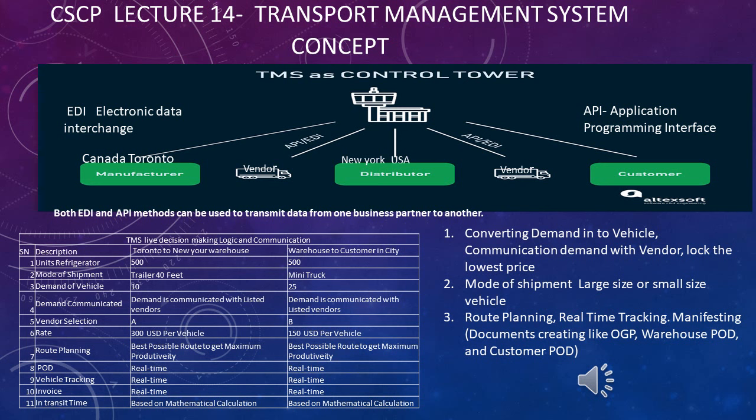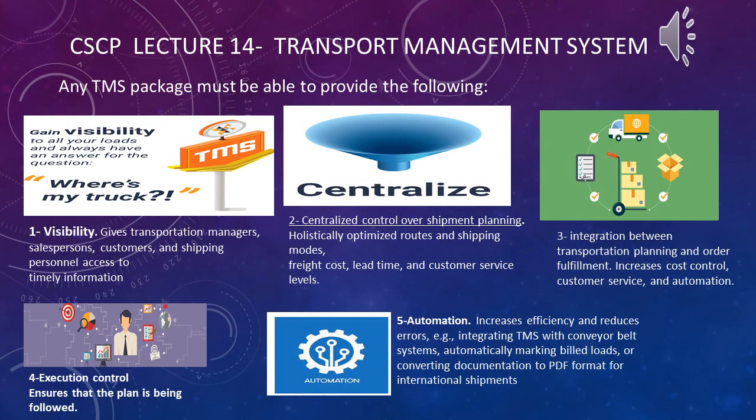TMS handles real-time manifesting and documentation — bills and invoices are generated automatically based on item details like serial numbers. You can track in real time and check proof of delivery in real time. Everything is happening in real time.